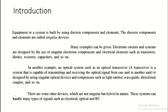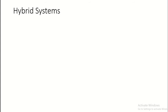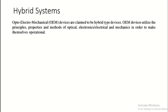There are some other devices which are not singular but hybrid in nature. Such devices are able to handle many types of signals, such as electrical, optical, and RF-based signals. Such systems are known as hybrid systems. Coming to hybrid systems, opto electromechanical (OEM) devices are claimed to be a hybrid type because the word itself means they utilize optical devices, some electronics, and mechanical components — that's why such a system is known as hybrid type.